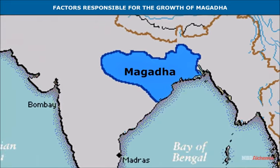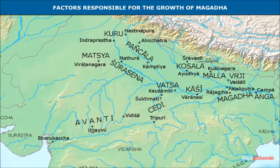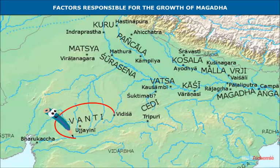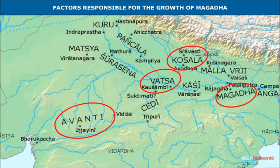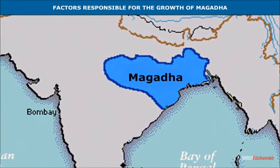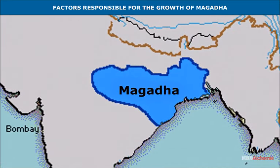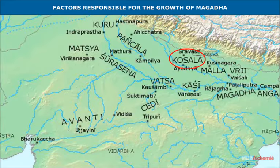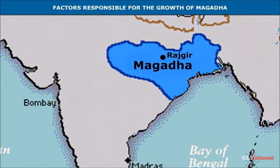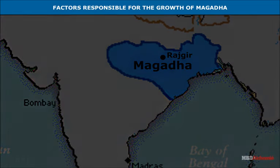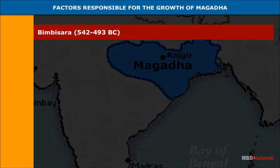Factors responsible for the growth of Magadha: By the sixth century BC, north India was divided into 16 Mahajanapadas, out of which Avanti, Vatsa, Kosala, and Magadha rose into prominence. Magadha, under the leadership of Bimbisara of the Haryanka dynasty, rose to political distinction. His policy of forming marriage alliances with neighboring kingdoms — Kosala, Vaishali, and the Madra — helped him rise over the other Mahajanapadas. The earliest capital, Rajgir, was surrounded by five hills that made it impregnable.